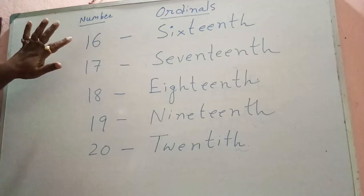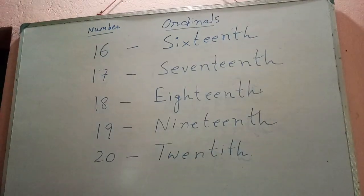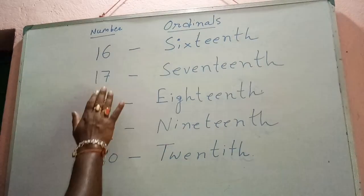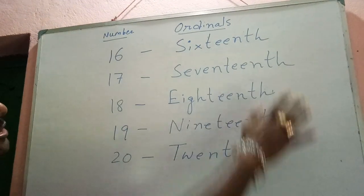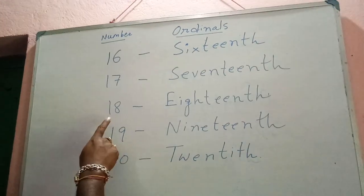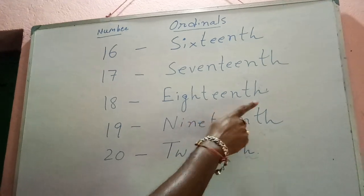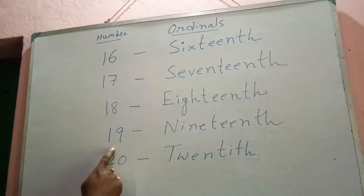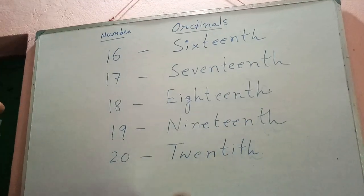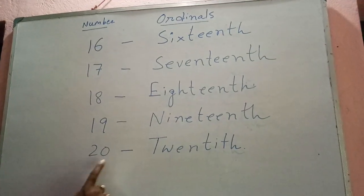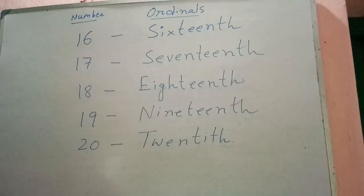Let me repeat once again: number is sixteen and ordinal will be sixteenth — S-I-X-T-E-E-N-T-H. Number is seventeen and ordinal is seventeenth — S-E-V-E-N-T-E-E-N-T-H. Number is eighteen and ordinal is eighteenth — E-I-G-H-T-E-E-N-T-H. Number is nineteen and ordinal is nineteenth — N-I-N-E-T-E-E-N-T-H. And last one, twenty, and the ordinal will be twentieth — T-W-E-N-T-I-E-T-H.